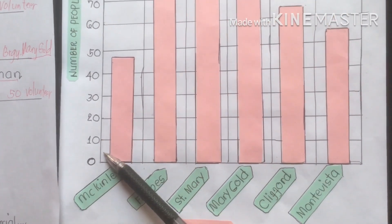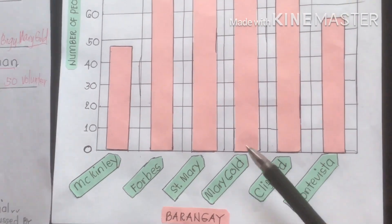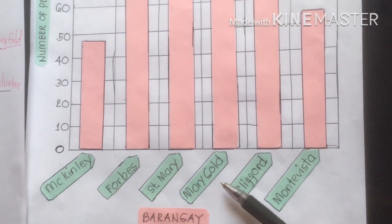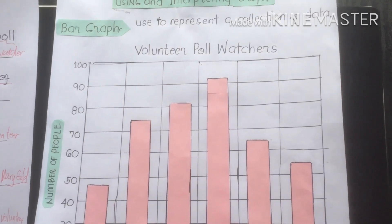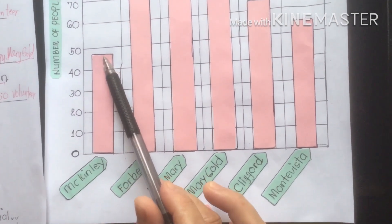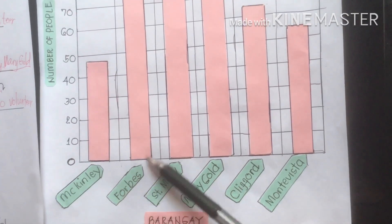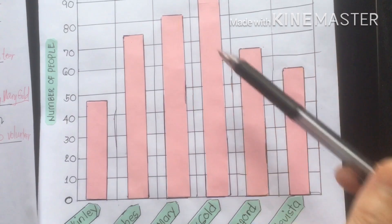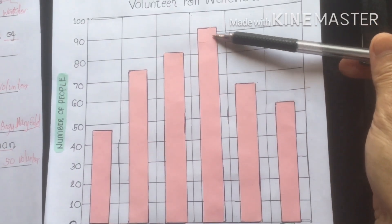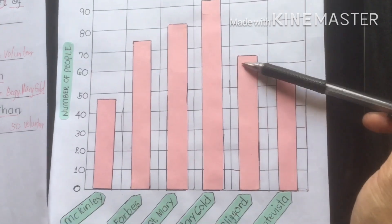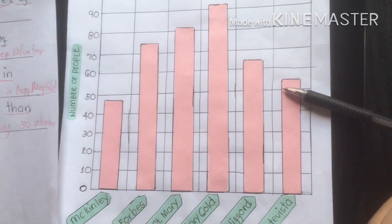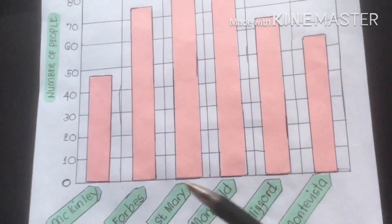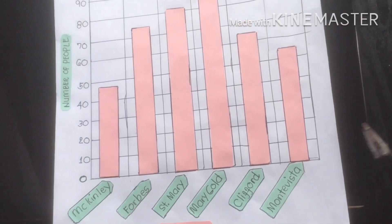By using and interpreting this graph we can answer questions immediately by checking the number of people and barangays and how many volunteer poll watchers there are in each barangay. To recap: Mackinley has 48, Forbes has 73, Saint Mary has 81, Marigold has 92, Clifford has 64, and Monte Vista has about 53 or 54.